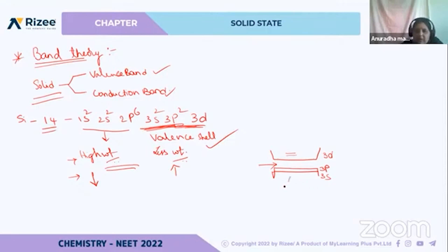This filled orbitals band is known as valence band. And this empty band is known as conduction band. Filled up orbitals band is known as valence band, and empty orbitals band is known as conduction band.